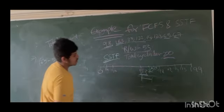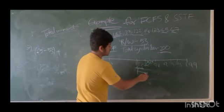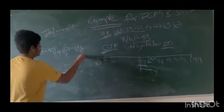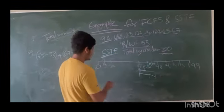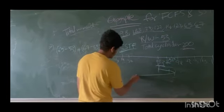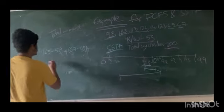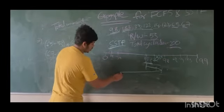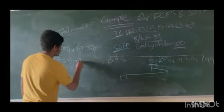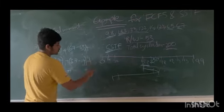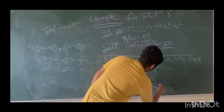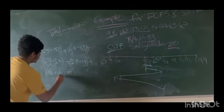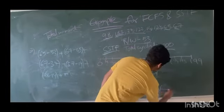The next closest is 67, so 67 minus 65. Next closest from 67 is 37, so 67 minus 37. The next is 14, so 37 minus 14. The next is 98, so 98 minus 14.